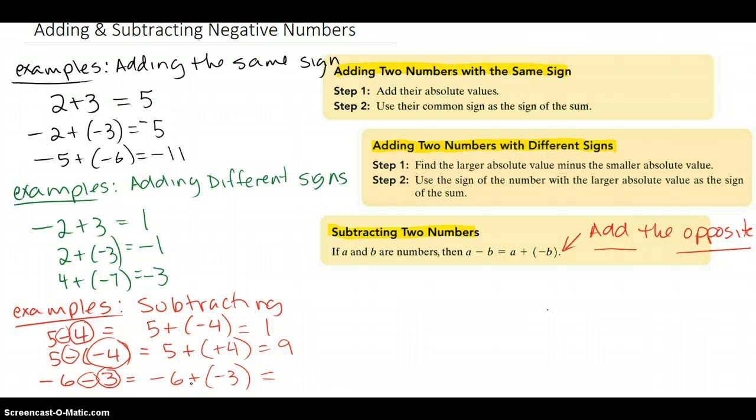Now we can use adding rules again. Negative 6 plus negative 3, those are the same sign. So we're going to add, use the common sign. That would be a negative 9.